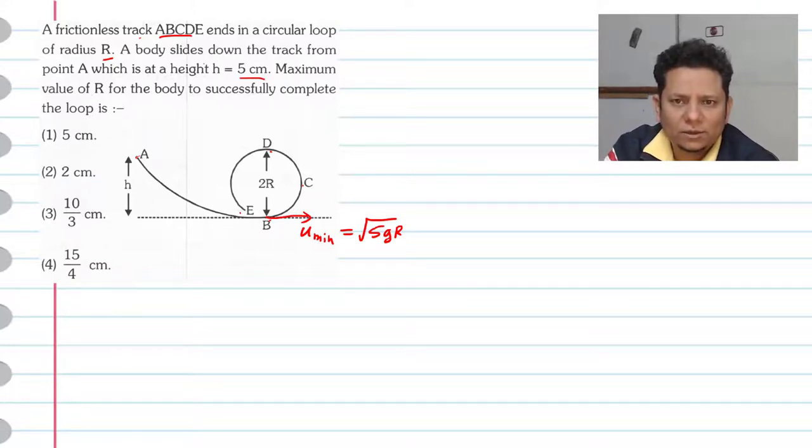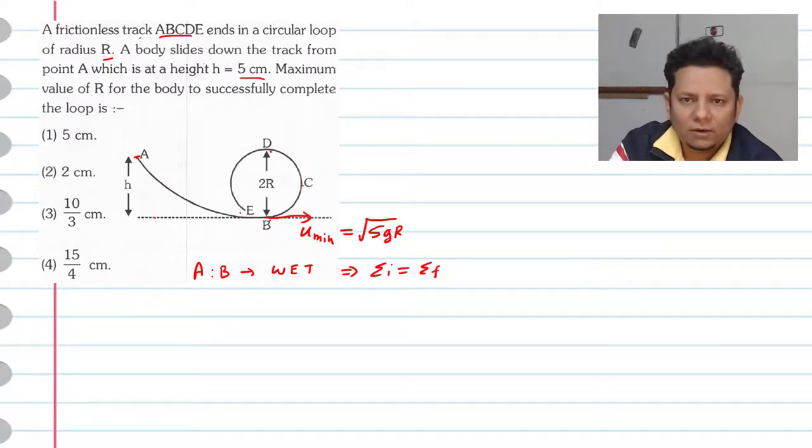Now, if we apply work-energy theorem between point A and B, we have point A and B. Because work done by external forces, work done by non-conservative forces, and work done by pseudo-forces are all zero, this implies that our initial energy will be equal to final energy.